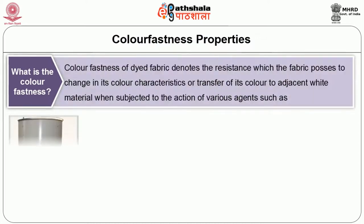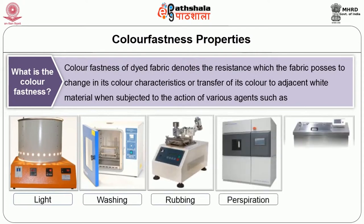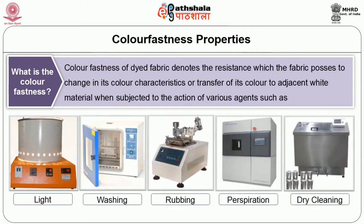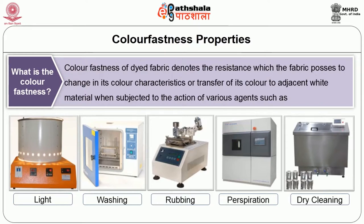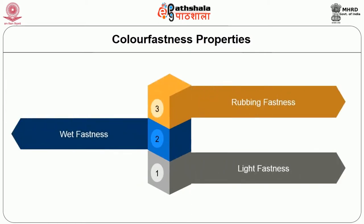Whenever we talk about dye, its colourfastness properties must be given importance. Colourfastness of dyed fabric denotes the resistance which the fabric possesses to change in its colour characteristics or transfer of its colour to adjacent white material when subjected to various agents such as light, washing, rubbing, perspiration, dry cleaning, etc. Among all types of fastness, light fastness, wet fastness and rubbing fastness are generally considered, and perspiration fastness is important for apparel alone.